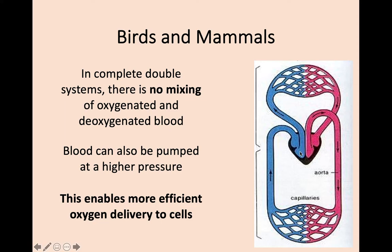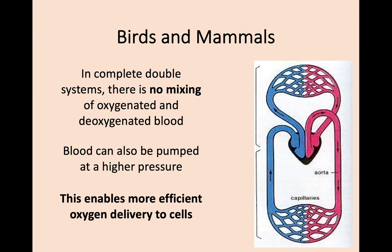The key feature of this being 'complete' is that there is absolutely no mixing of oxygenated and deoxygenated blood. Deoxygenated blood is sent to the lungs to gain oxygen and release carbon dioxide. That oxygen-rich blood enters the left side of the heart where it does not mix with any other blood, and is sent around the body. Blood is sent out of the aorta at very high pressure, and the thicker wall of the ventricle ensures even higher pressure to travel all the way around the body.